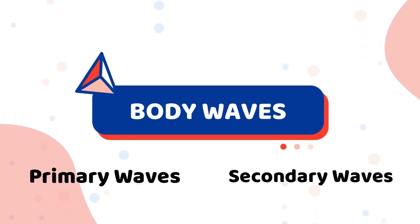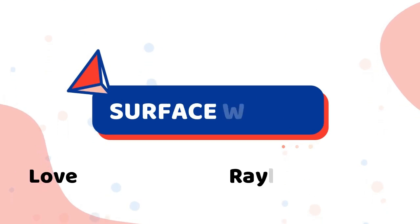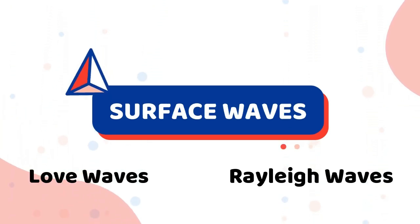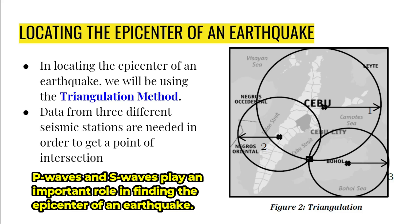Just a short recap of what we discussed in the previous video: there are two main types of seismic waves — body waves and surface waves. Body waves have two subtypes: primary waves and secondary waves, while surface waves also have two subtypes: love waves and Rayleigh waves. Going back to the two types of body waves, since these waves can travel through the interior of the Earth, they play an important role in identifying the epicenter of an earthquake.